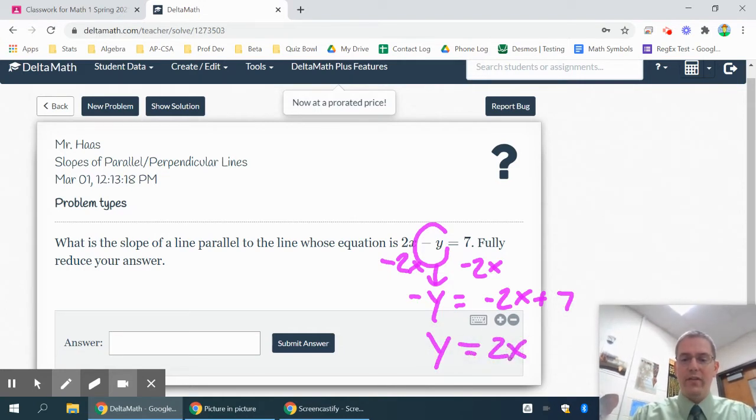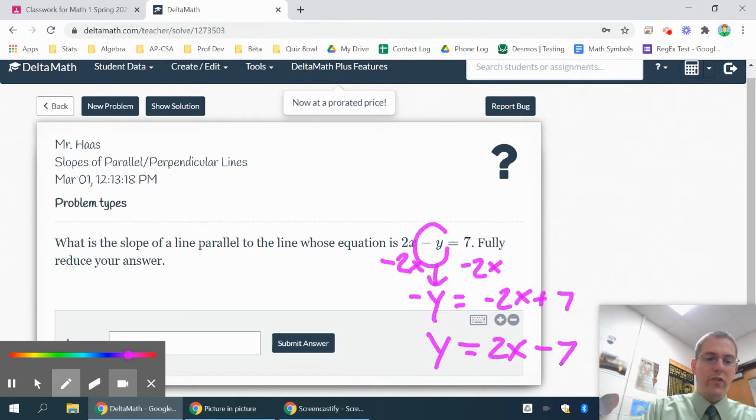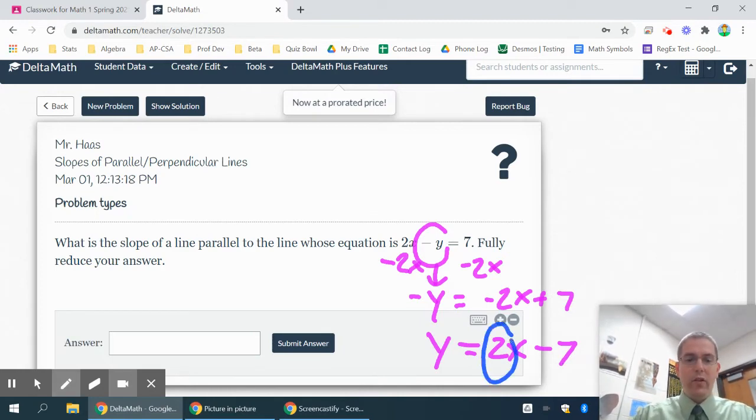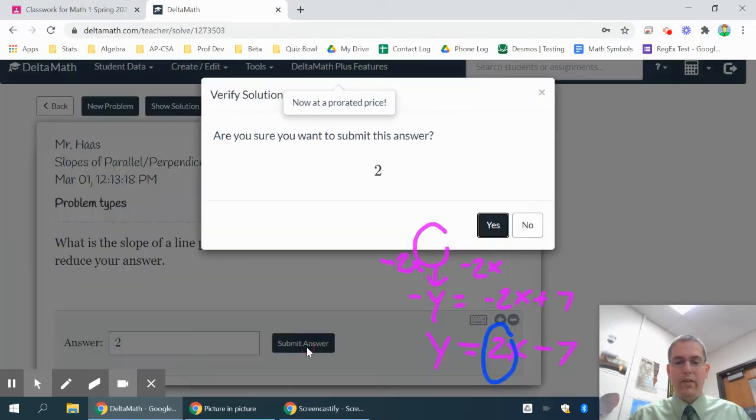If you want to think of it as dividing by negative 1, that's fine. And then your slope is your number in front of your x, so in this case your slope is a 2. So anything that is parallel to that line will have a slope of 2 because parallel lines have the same slope. That's how you do that.